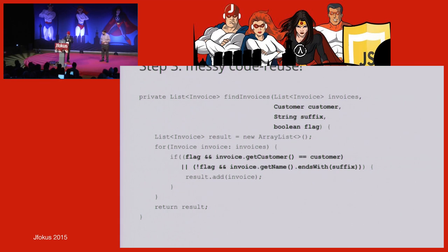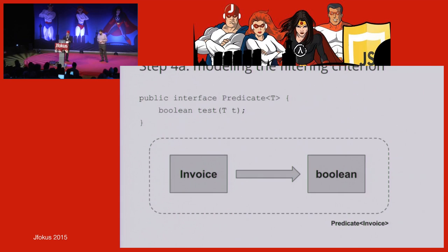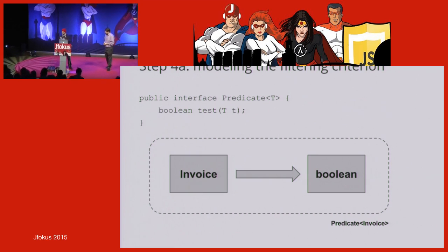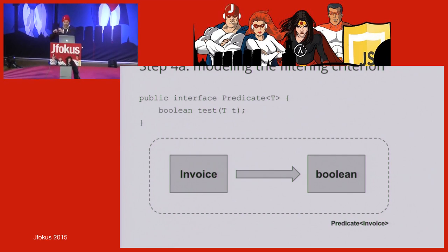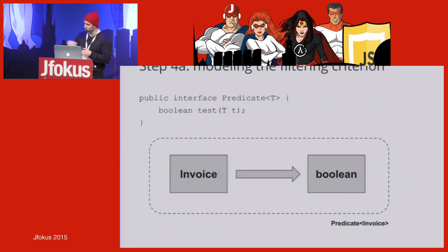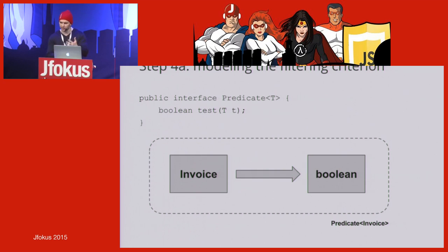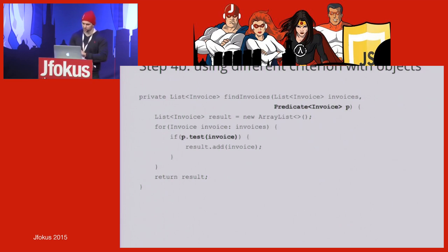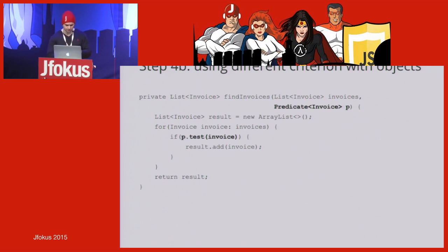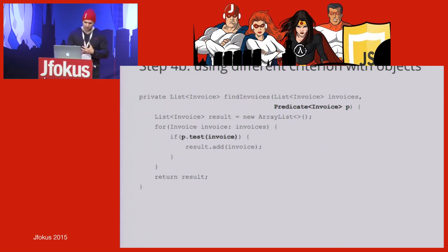So here comes the software engineering hat. What we'd really like to do is model the condition that is applied on each invoice. We introduce an interface called Predicate. From English, a predicate is something that returns a boolean. We've got a Predicate interface with a type parameter T, just in case there'll be other things than invoices. This has a method called 'test' that takes an object of type T and returns a boolean. Now I'm able to model that condition. So let's refactor our find-invoice method: instead of introducing all those parameters, we introduce a Predicate object — this condition — as a parameter, and update the condition in the middle to test each invoice based on that.